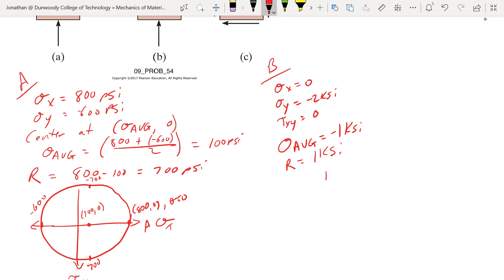Tau xy, sigma x... 1 ksi. So here's our point A. There's negative 2 ksi, that's our A. Here is R at 1 ksi, tau xy max, 1 ksi.